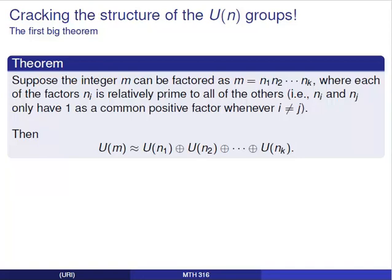Here's the first of those theorems. Suppose that the integer m can be factored as m = n1 × n2 × ··· × nk, where each of the factors ni is relatively prime to all of the others — any two distinct factors share no common factor greater than 1. In that situation, U(m) is isomorphic to U(n1) × U(n2) × ··· × U(nk). We've taken the group of units and broken it down into smaller groups of units based on the factorization of the number.